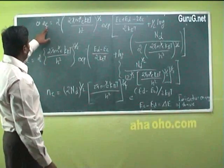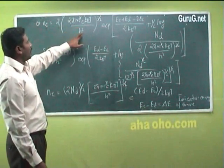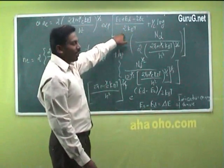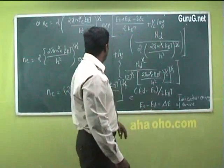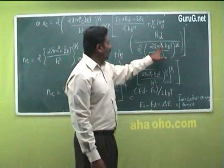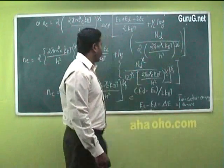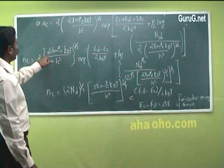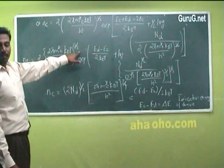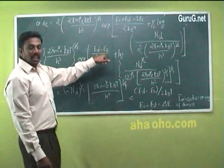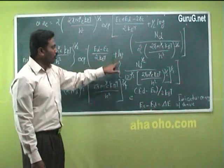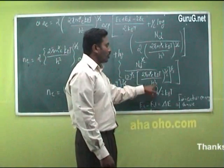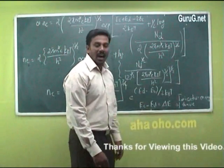This equation is written as n(E) = 2 × (2π m*_e k_B T / h²)^(3/2) × exp[(E_c + E_d − 2E_c) / (2 k_B T) + log(N_d / (2 × (2π m*_e k_B T / h²)^(3/2)))]. This is further simplified as n(E) = 2 × (2π m*_e k_B T / h²)^(3/2) × exp[(E_d − E_c) / (2 k_B T)] + log[N_d^(1/2) × (2π m*_e k_B T / h²)^(3/4)].